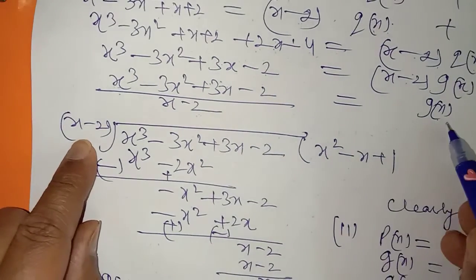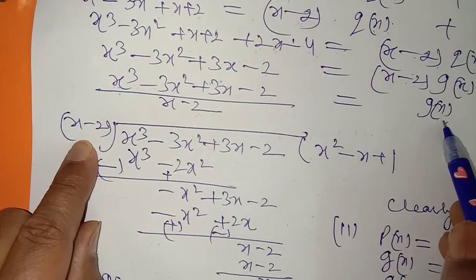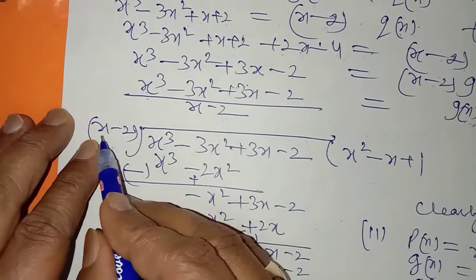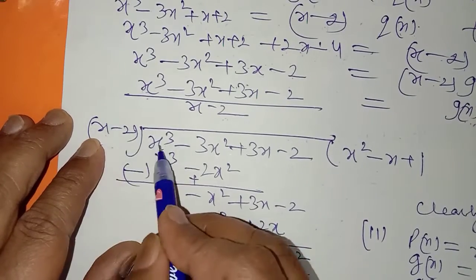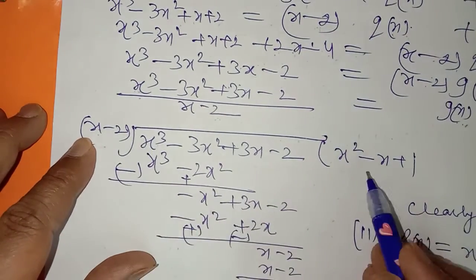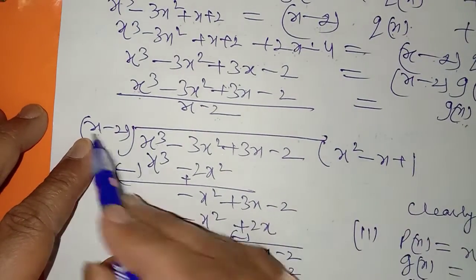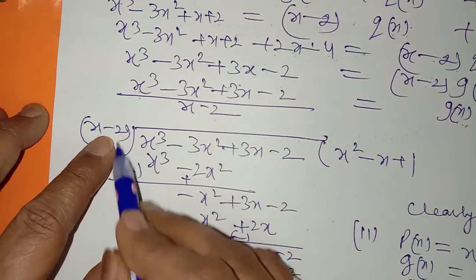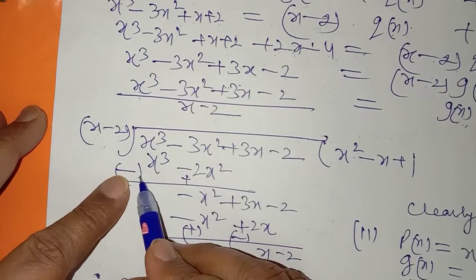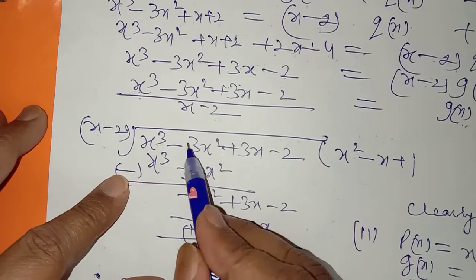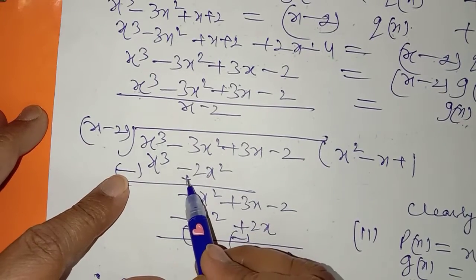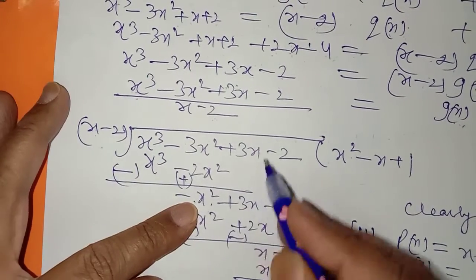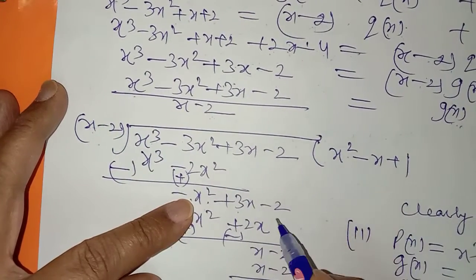تو یہ جو answer ہوگا وہ gx ہوگا — simply divide کریں۔ x cube ہے، یہاں پر x ہے، تو x square سے multiply کرنا ہے۔ x square یہ رہا، x cube آیا، minus 2x square آیا۔ sign change کرتے ہیں: minus، minus، plus — different signs subtract ہوئے۔ minus x square، plus 3x، minus 2 آیا۔